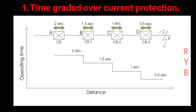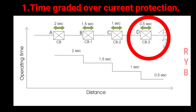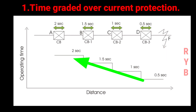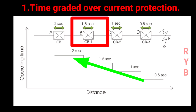The relay nearest to the end of the line has the minimum time setting, while the time settings of other relays successively increase towards the source. For example, suppose there is a source at point A. At point D, circuit breaker CB3 is installed with a definite time relay operation of 0.5 seconds. At point C, circuit breaker CB2 is installed with a relay operation time of 1 second. At point B, circuit breaker CB1 is installed nearest to source A, with a relay time setting of 1.5 seconds.